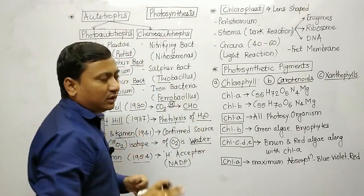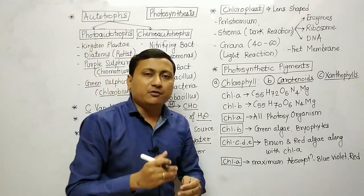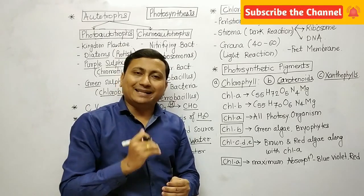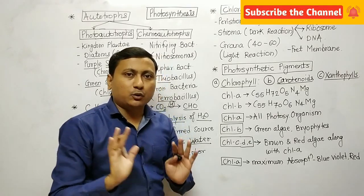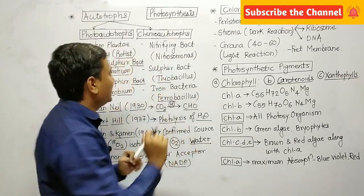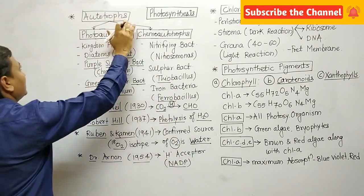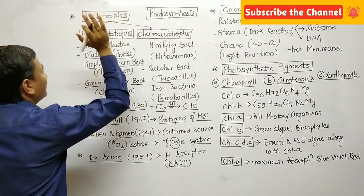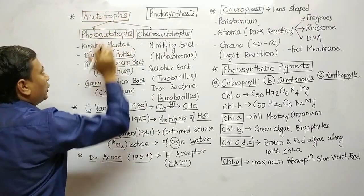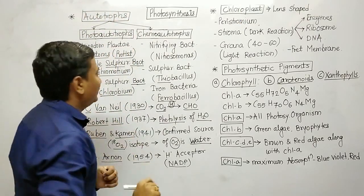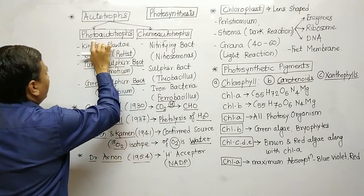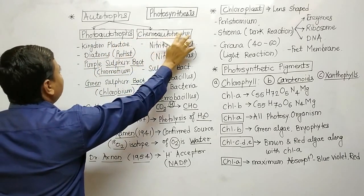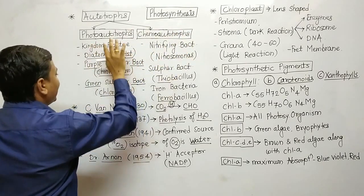What are autotrophs? The organisms which prepare their food on their own are known as autotrophs. There are two classes of autotrophs: photo-autotrophs and chemo-autotrophs.